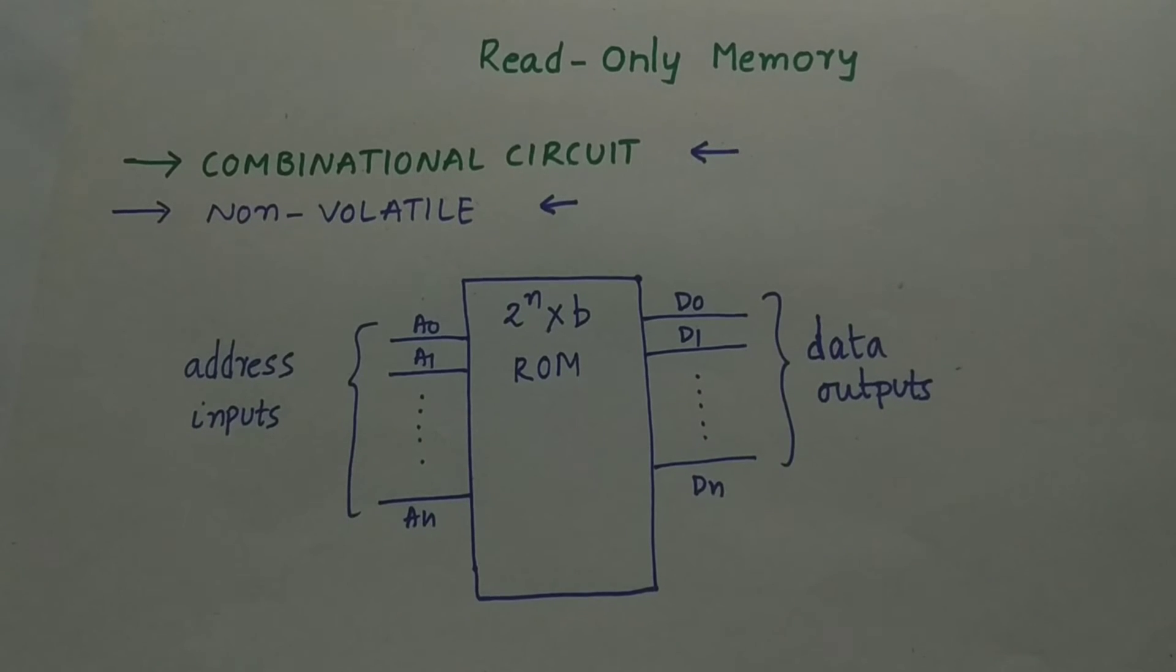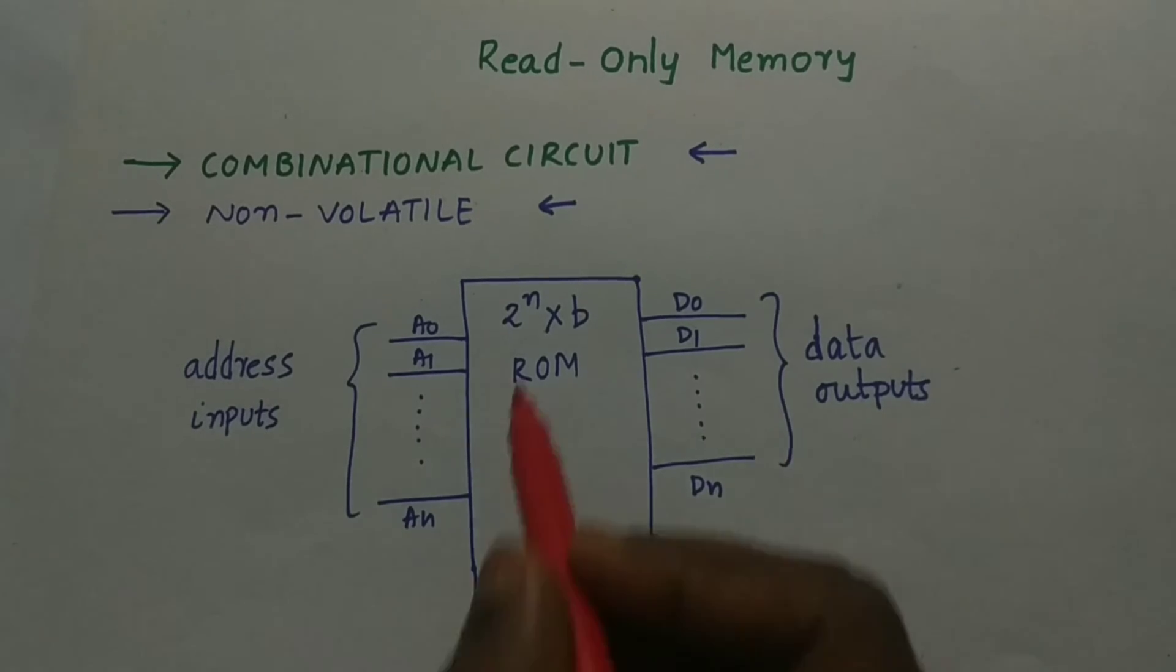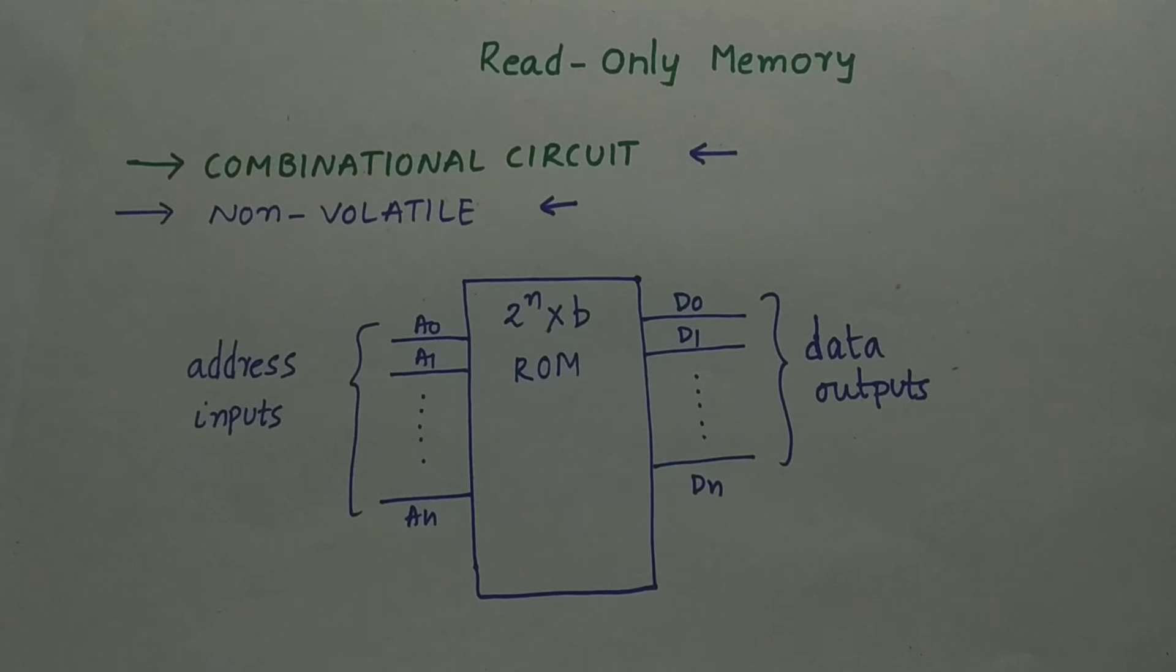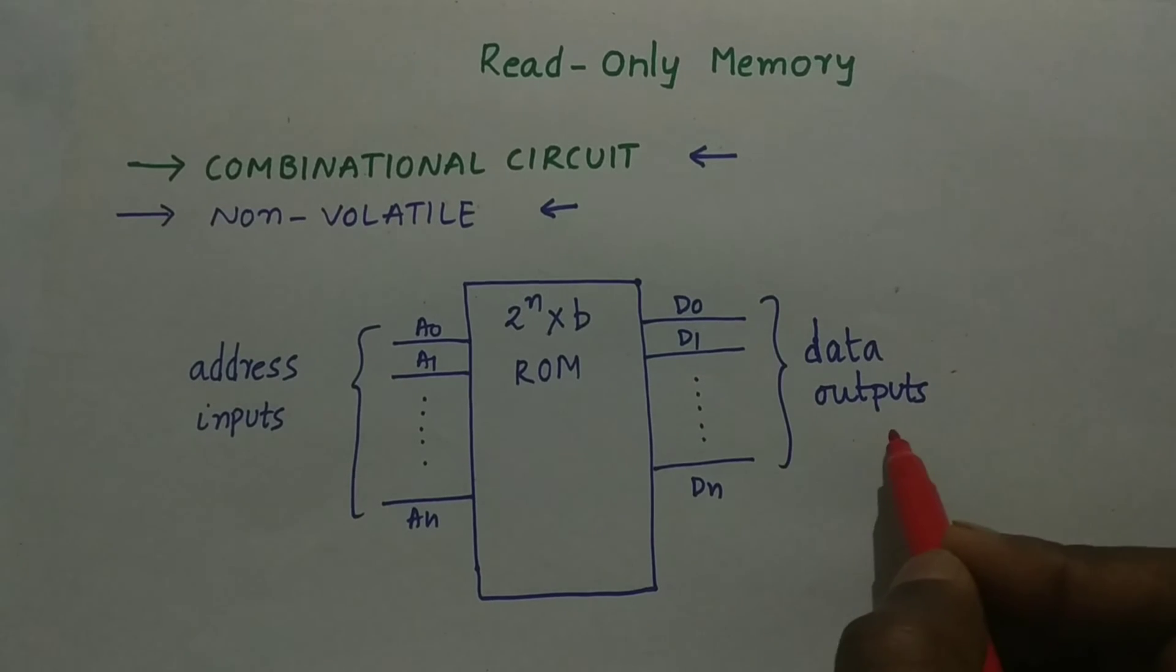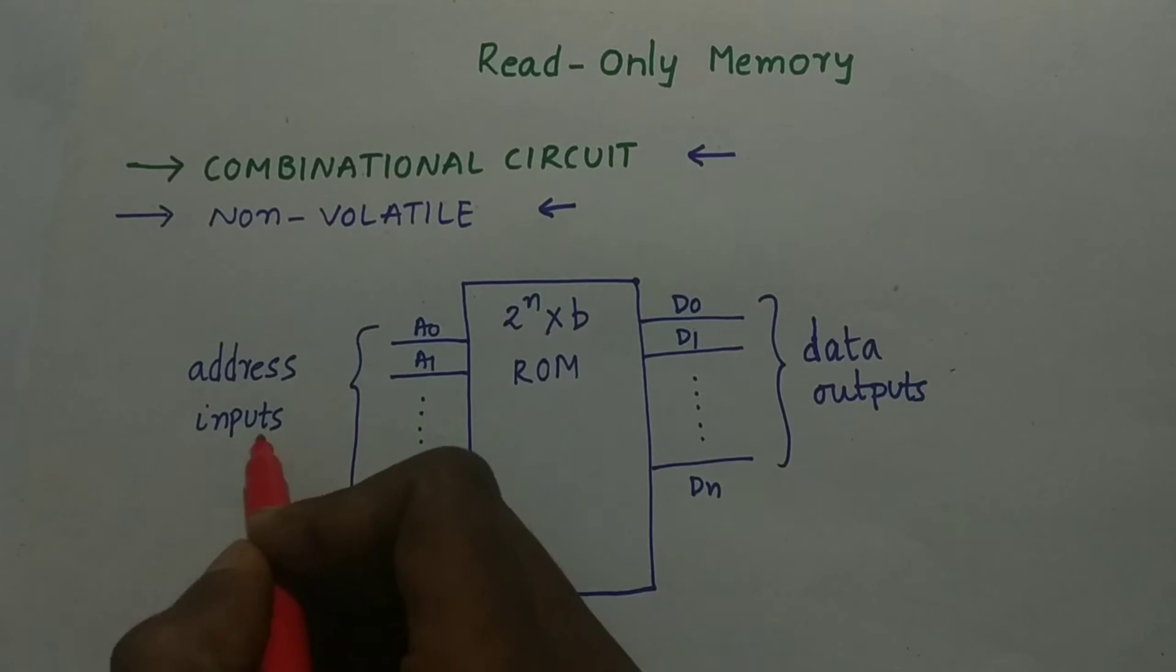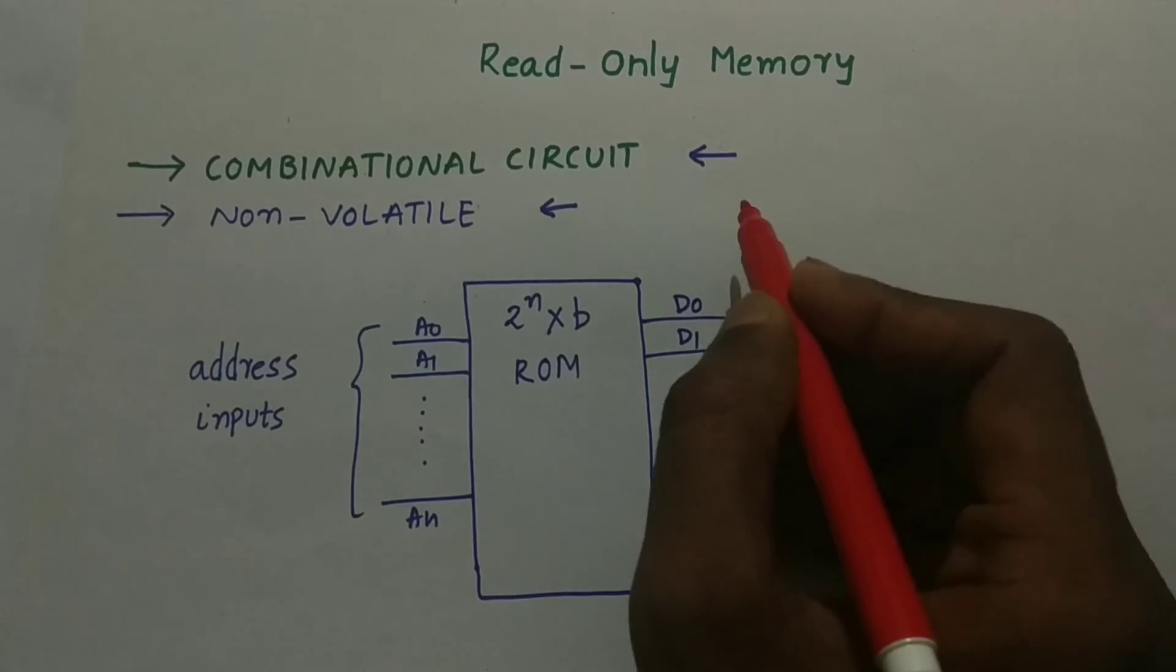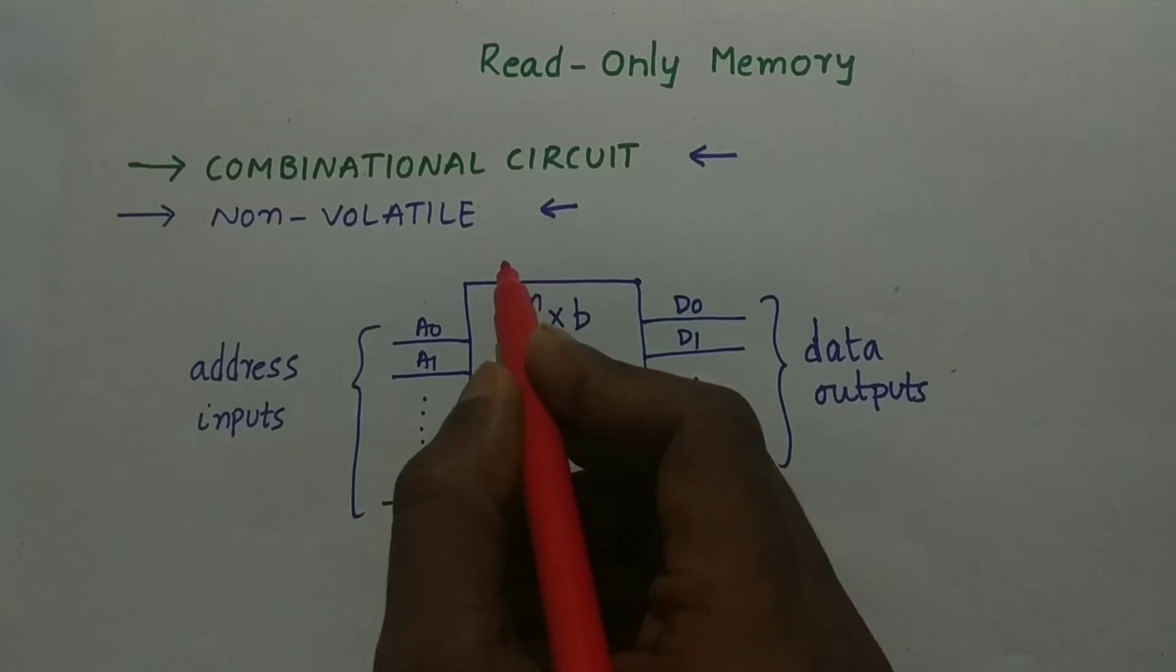Read-only memory is a combinational circuit. Understand this point, read-only memory is a combinational circuit, it's not a sequential circuit. Why? Because ROM is only dependent upon the address inputs. The output of the ROM is only dependent upon the inputs, not on the previous inputs as the sequential logic does. So now ROM is also non-volatile because it preserves the content even the power is off. These are the two important points you must remember about the ROM that it is a combinational circuit and it's non-volatile.